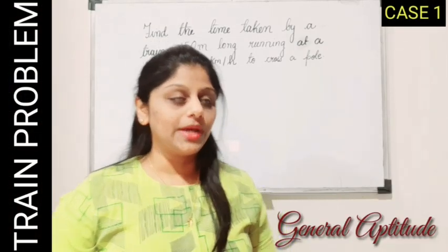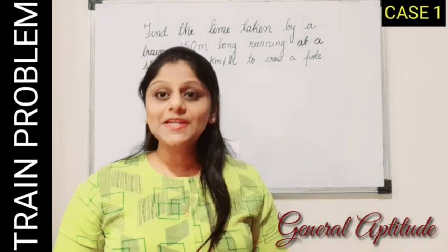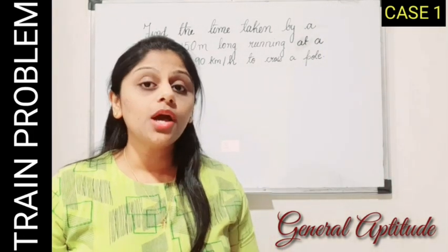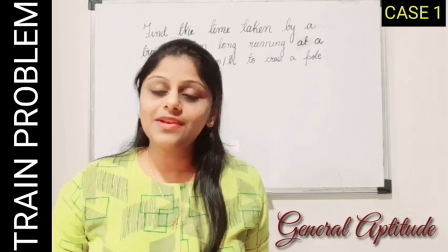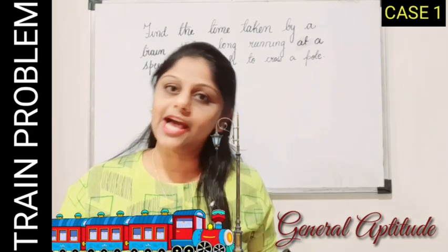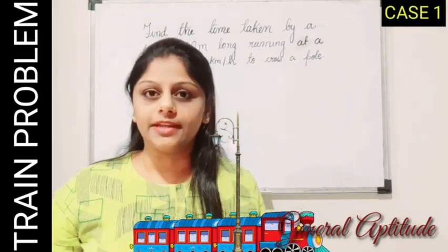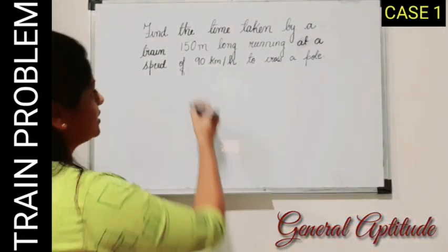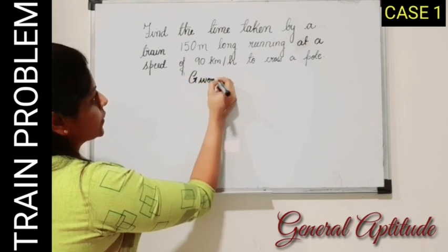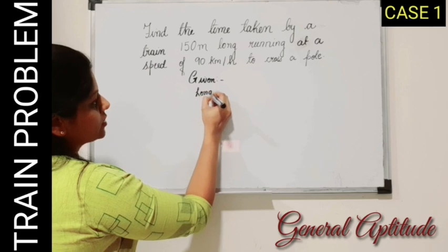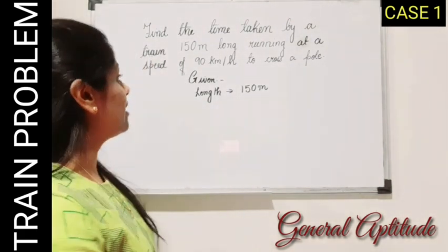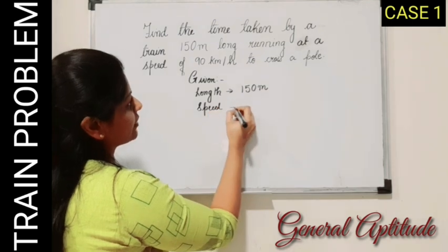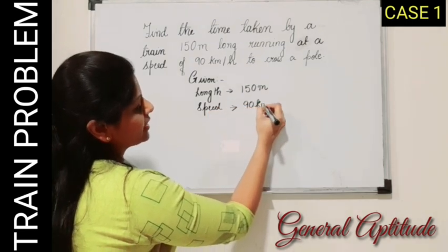Let's do a question on case 1. Find the time taken by a train of length 150 meters moving with a speed of 90 kilometers per hour to cross a pole. The train has to cross the pole completely and we have to find the time taken. Given: length of the train is 150 meters, and the speed of the train is 90 kilometers per hour.